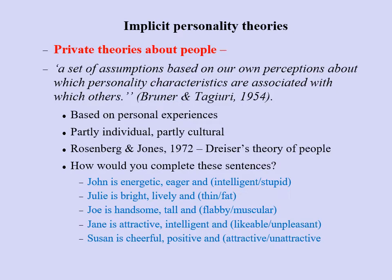Beyond universal distortions, each of us individually has a private implicit theory of personality — a view of human nature. These can be defined as a set of assumptions based on our own perceptions about which personality characteristics are associated with which others. For example, if someone is described as energetic and eager, you might assume they are more likely to be intelligent than stupid, based on your personal experience that energetic and eager people tend to be intelligent.